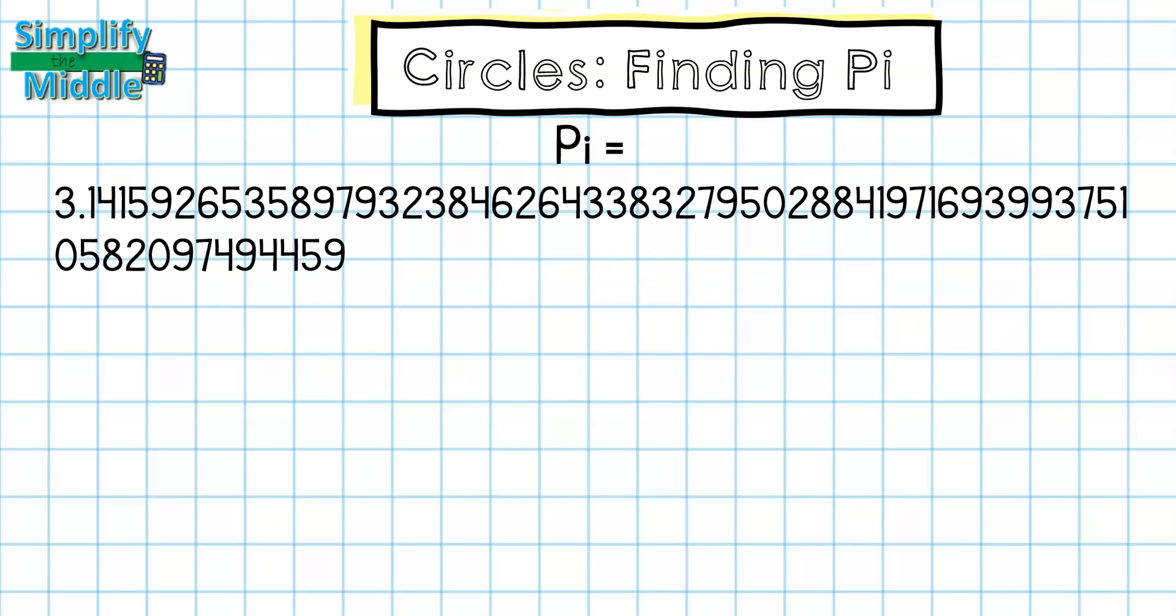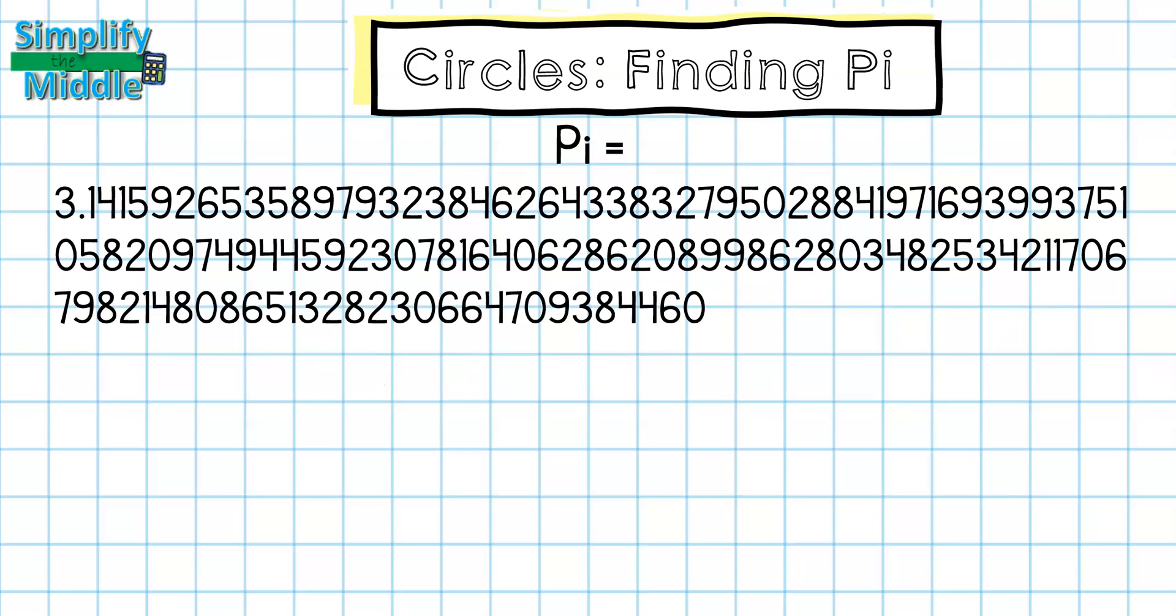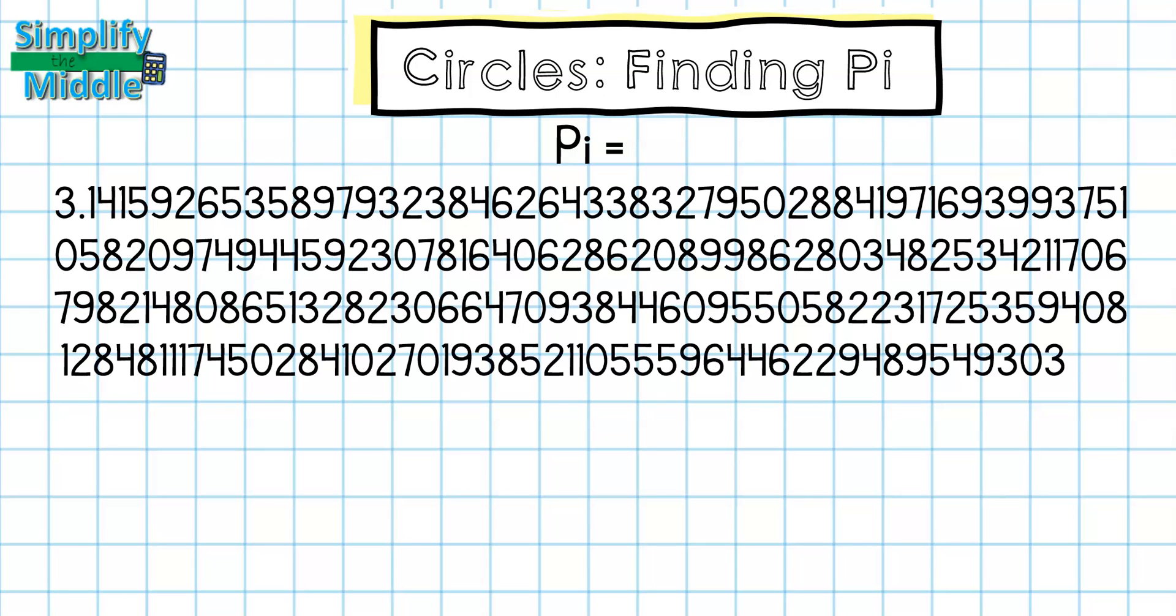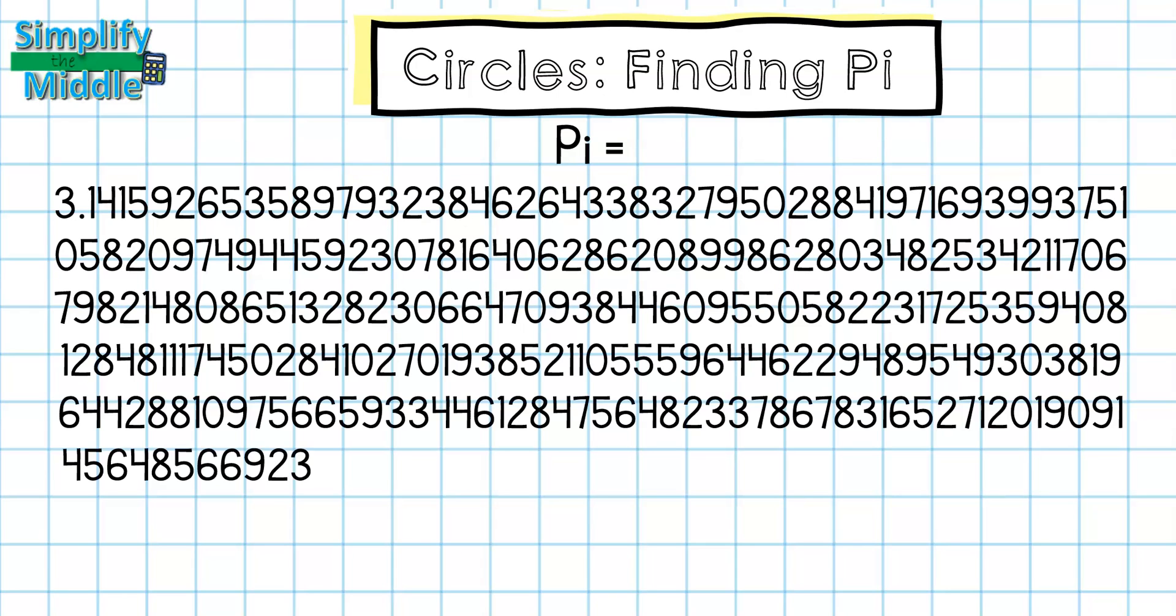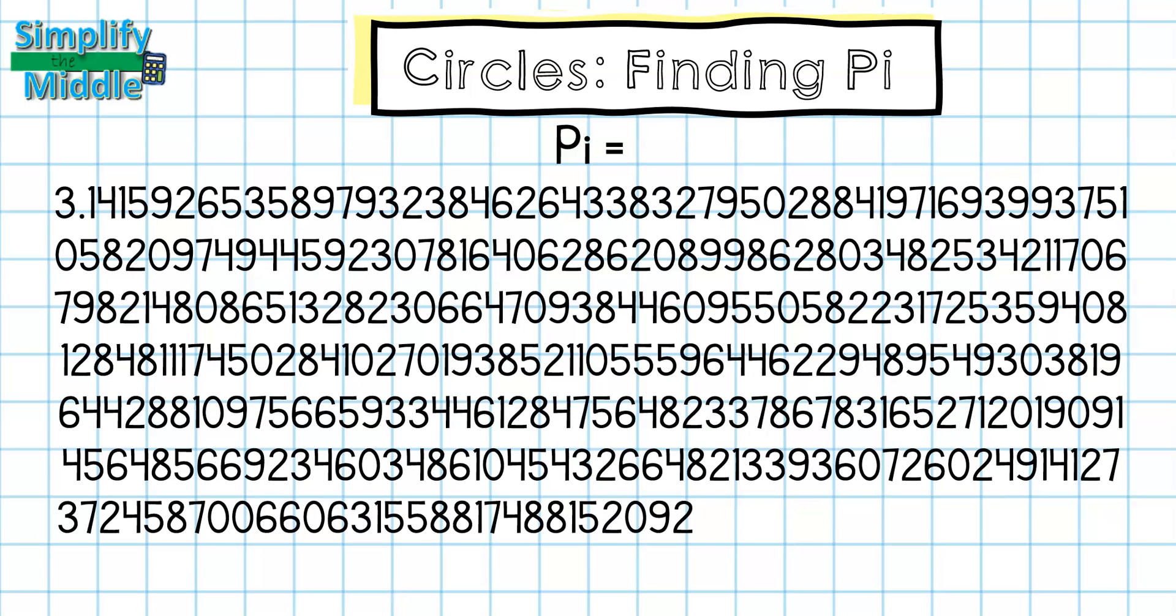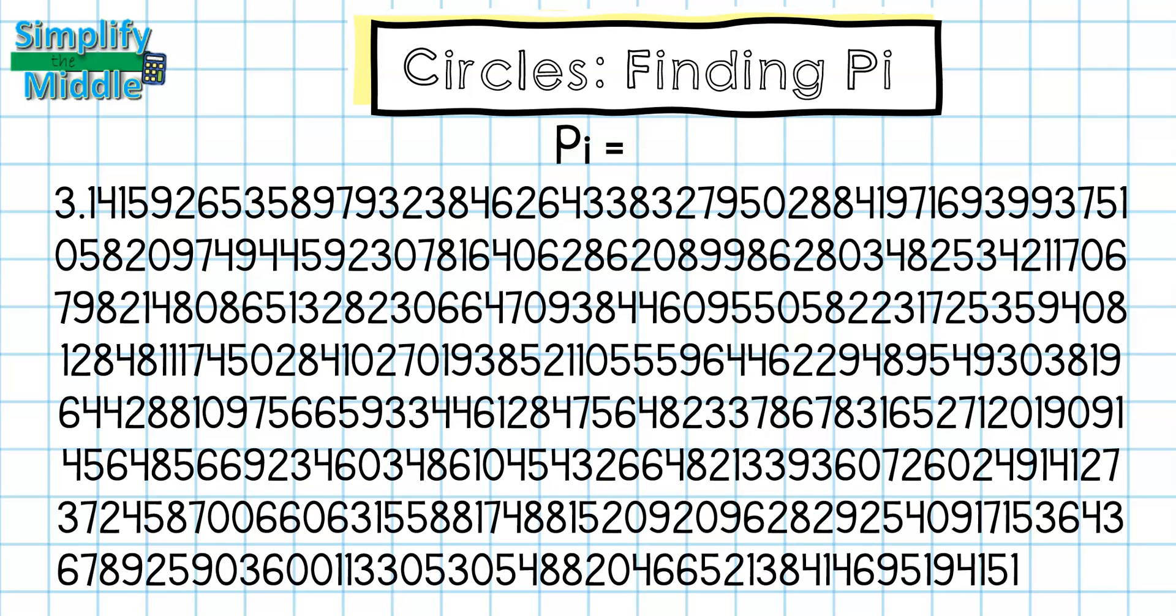In fact, these are the first 400 digits of pi. Notice that none of the numbers seem to repeat themselves and there isn't any particular pattern. Pi goes on and on and on and doesn't actually have an ending. So it makes sense that we're using approximations when we're just trying to find a value for our circles.